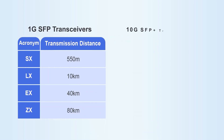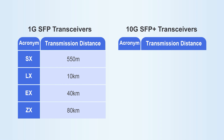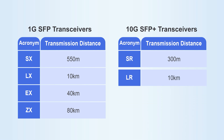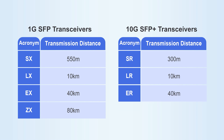In a 10G SFP+ optical module, SR refers to a short-distance optical module with a transmission distance of 300 meters, LR refers to 10 km, ER refers to 40 km, and ZR refers to 80 km.